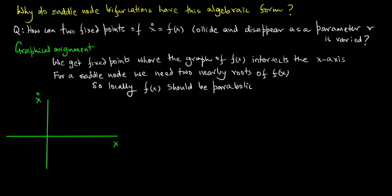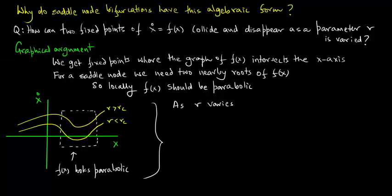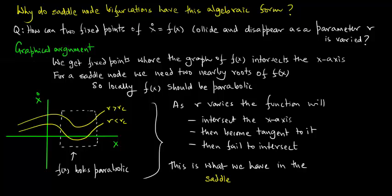Plotting x_dot versus x for a function f(x), we see what happens for r greater than r_critical and for r less than r_critical. Looking closely, f(x) actually looks parabolic. As r varies, the function will intersect the x-axis, then become tangent to it, and then fail to intersect. This is exactly what we have in the saddle node bifurcation.